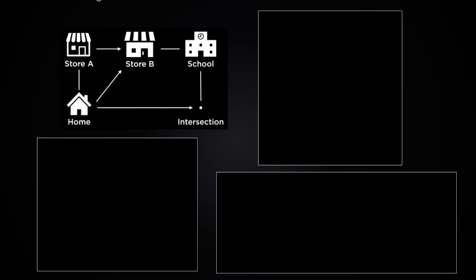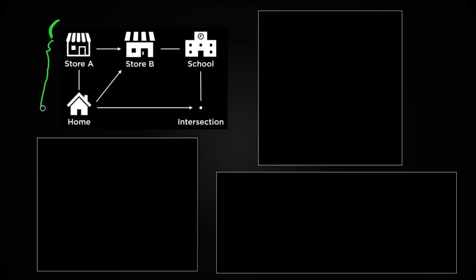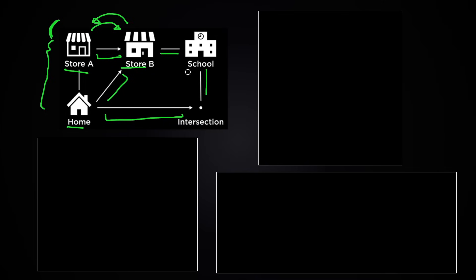Let's say you want to make a system sort of like Google Maps for your neighborhood. Your home is here, there's a store here, another store here, and there are some streets too. These arrows show one-way streets — you can go from store A to store B, but not the other way around. The other lines show two-way streets.